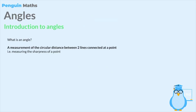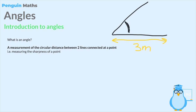Let's go over a little introduction on what an angle actually is in the field of maths and geometry. Although you may have covered angles in the past, it's important to refresh your memory and go back to basics. An angle is defined as a measurement of the circular distance between two lines connected at a point. By circular distance, imagine a straight line measured in meters - that's a straight distance. An angle concerns the space in between two lines, measuring the sharpness of a point or the circular distance between them.